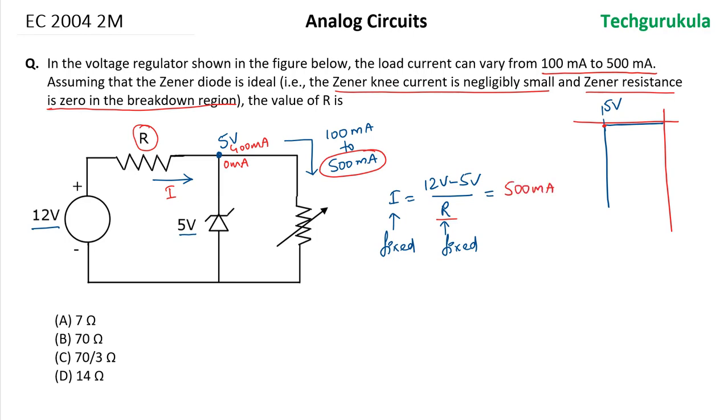So that when 100 milliamperes is flowing through the load resistor, 400 milliamperes will be going through the Zener diode. And when 500 milliamperes is flowing through the load resistor, 0 milliamperes will be flowing through the Zener diode.